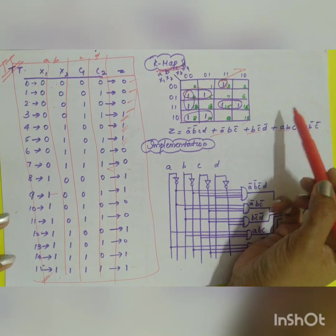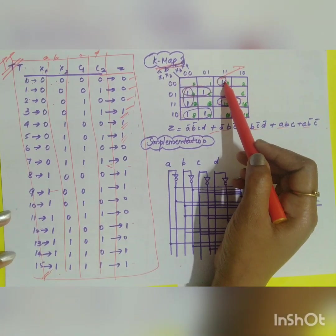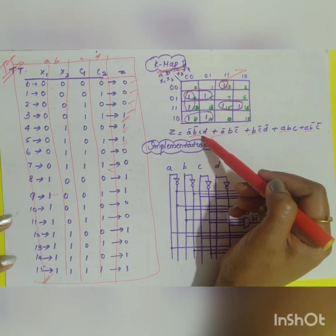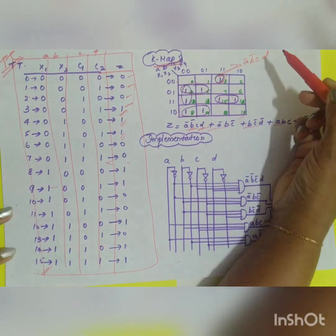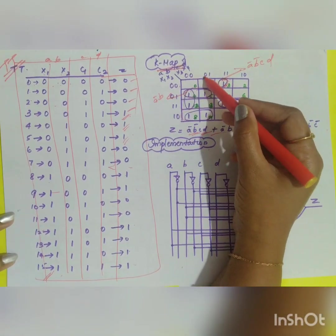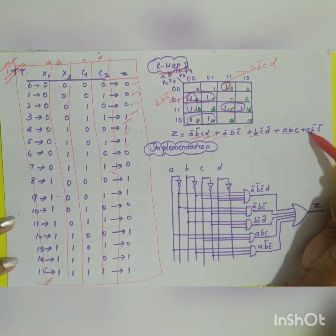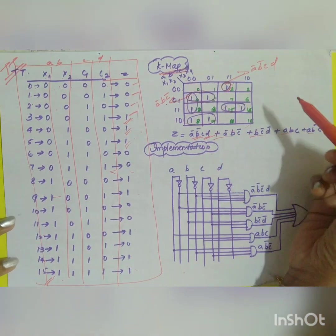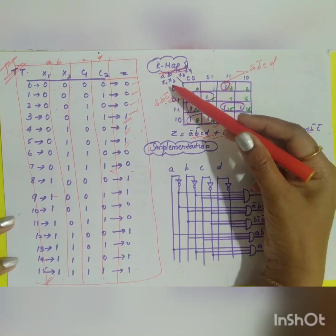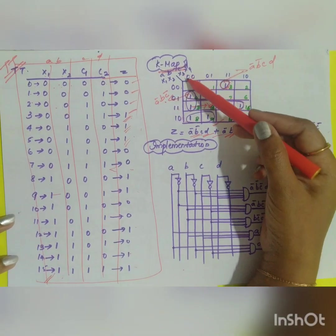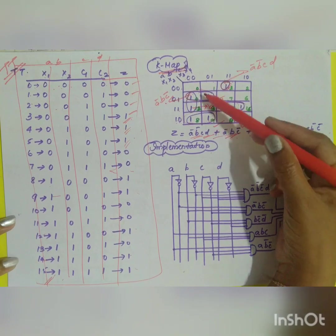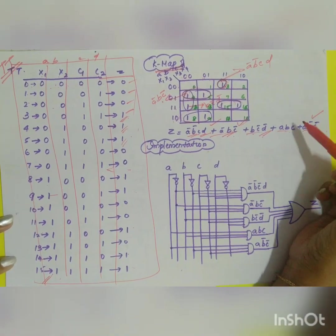Write the sum-of-products terms for each group. For example, one group gives ā·b̄·c·d. Another group gives ā·b·c̄. Another yields b·c̄·d̄. Another gives a·b̄·c̄. Repeat this process for each remaining group to complete the full Boolean expression in SOP form.